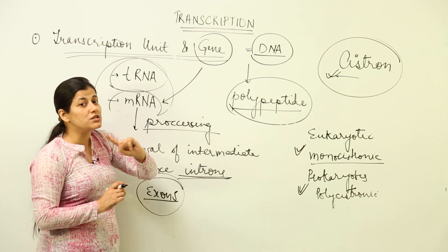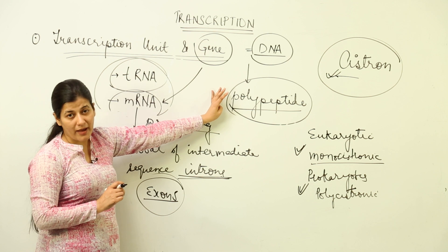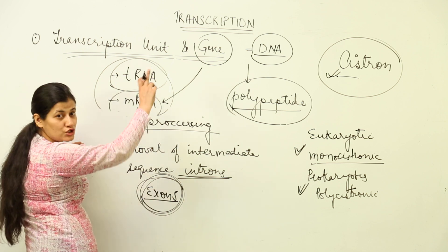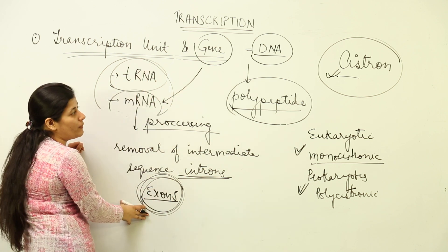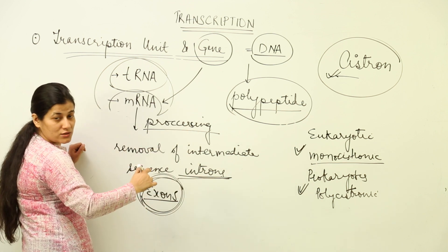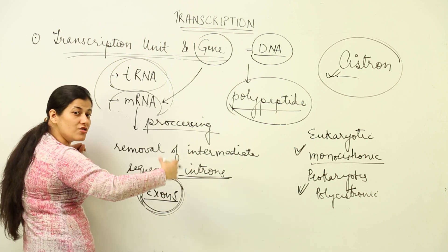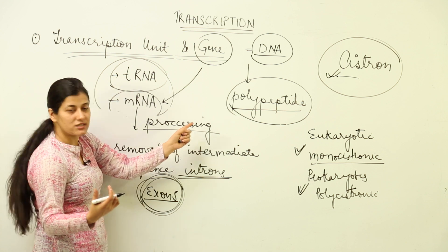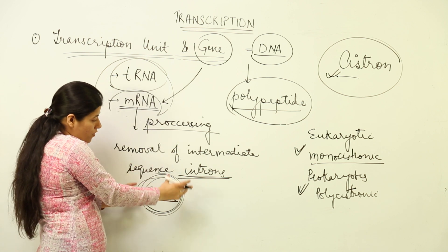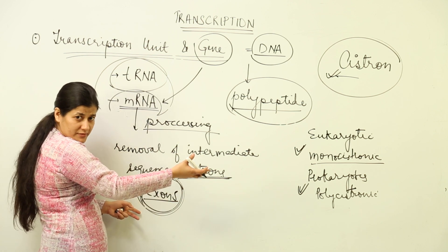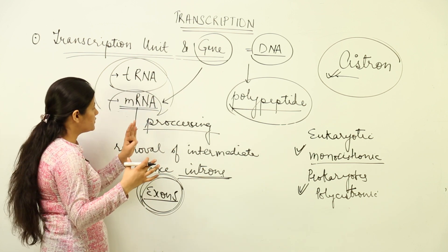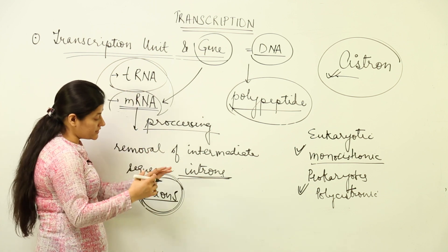The exons are that part of the cistron responsible for forming the polypeptide. The introns are unwanted sequences present between the exons and they are removed by a special process known as splicing, which we will study in the next lesson. So this mRNA undergoes processing — the precursor RNA undergoes processing to form the final mRNA.